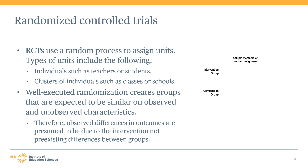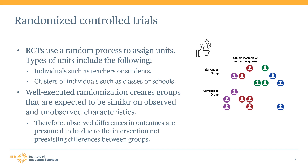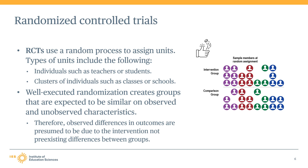Now let us turn to the two types of designs eligible for review under the WWC group design standards. Randomized controlled trials, or RCTs, are one of two eligible designs. In an RCT, a study randomly assigns units to two or more groups. In a simple RCT, one group receives the intervention and the other serves as the comparison group. The units assigned to conditions might be individuals such as teachers or students, or they might be clusters like classes, schools, states, or districts.